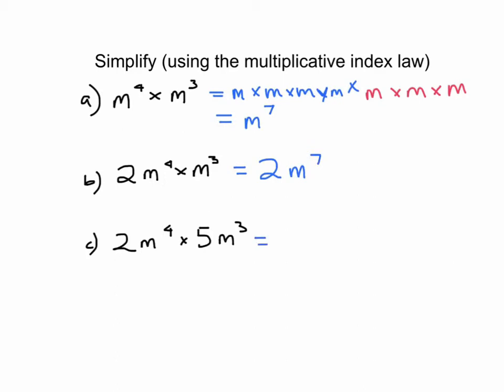Now if you've got 2 numbers here and it's asking you to simplify, that really means evaluate what the number is. So you get 2 times 5 equaling 10, and the rest is as before, so you've got m to the power of 7.